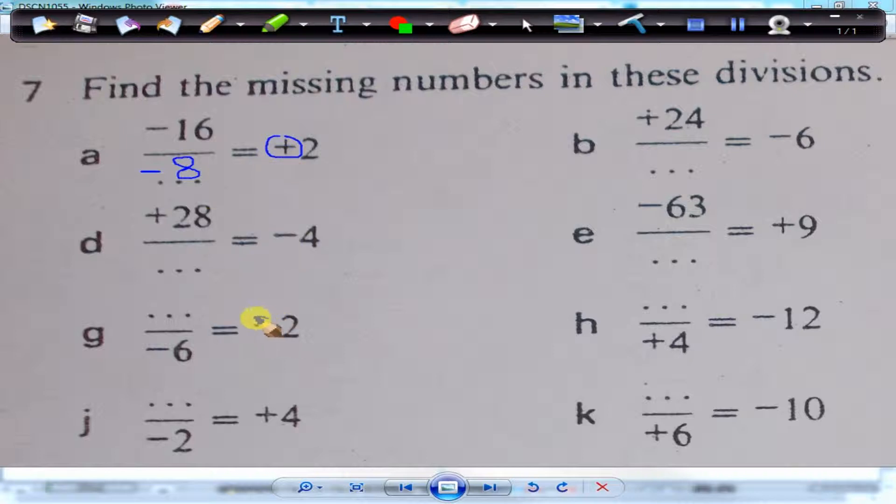So, this is minus 2. If it's minus, that means the signs must be different, so that's opposite. So, that's a minus, that will have to be a plus. So, we have plus 12 divided by minus 6 gives you minus 2.